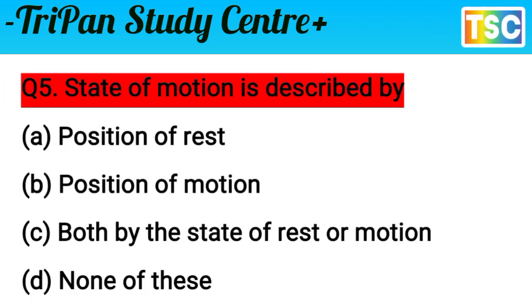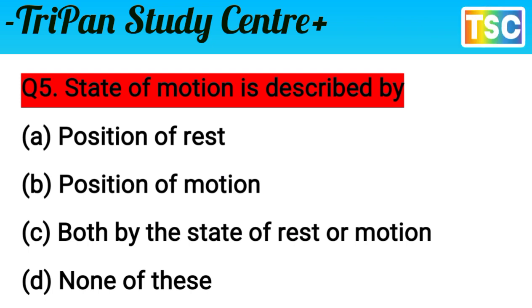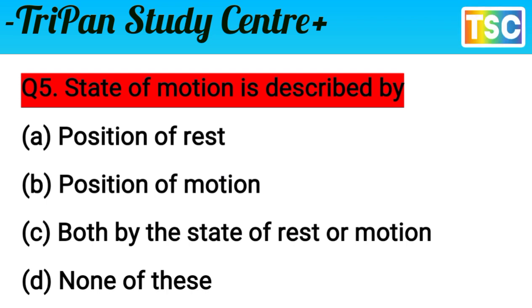Next question: a state of motion is described by — A) position of rest, B) position of motion, C) both the state of rest or motion, D) none of these. Position of rest is correct, and position of motion is also correct, so both options apply. Therefore option C is correct — both state of rest and motion.